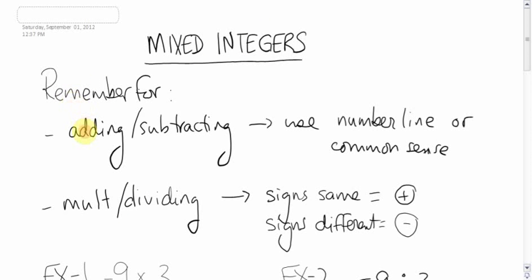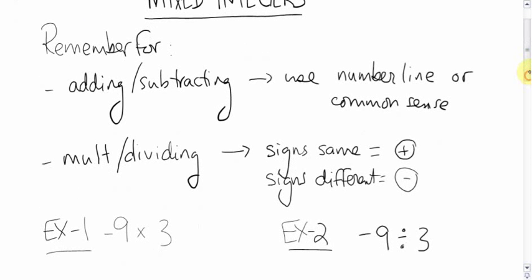Anyways, let's take a look back. A little trip to memory lane. Remember, when you're adding or subtracting integers, we either used a number line or just used common sense. For multiplying and dividing, the key thing to remember was, if the signs were the same, the answer was positive. If the signs are different, the answer is negative.